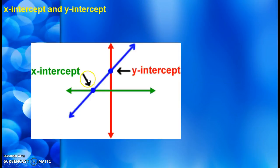The x-intercept is the x value where the line crosses the x-axis. Similarly, the y-intercept is the y-value where the line crosses the y-axis.